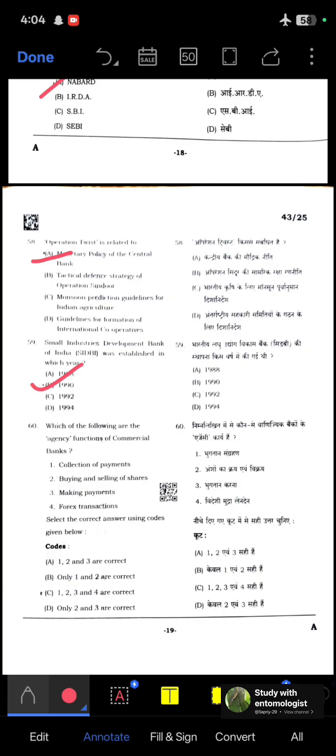Last question: Which of the following are the agency functions of commercial banks? Collection of payment, buying and selling of shares, making payments, and forex transactions. All are the work of agency functions of commercial banks like collection of payments, buying and selling of shares, making payments, and forex transactions. All will be the answer.